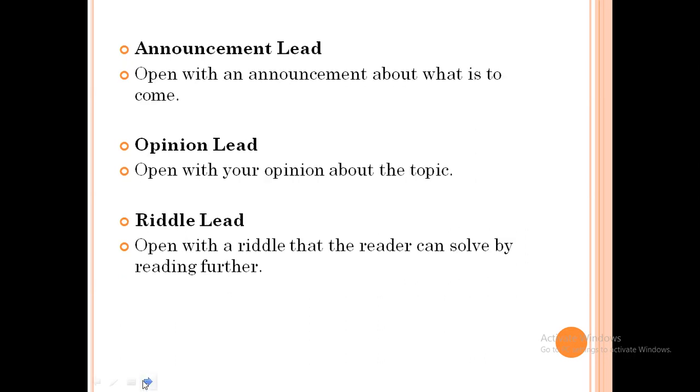Next is announcement lead. This opens with an announcement about what is to come. However, reporters should not insult the reader by saying something like 'I am going to tell you about.' The reader should be able to figure out what you are writing about. If not, there is something wrong with what you have written. It is not with the reader. The reader should be able to figure out what the reporter is trying to say. Otherwise, there is some problem in the writing. That is announcement lead.